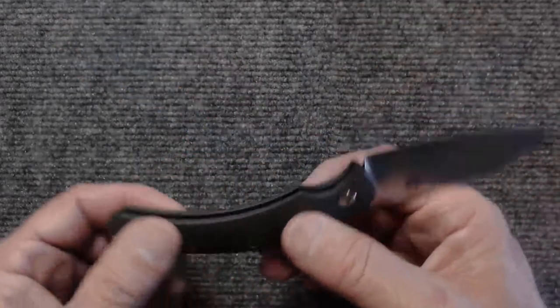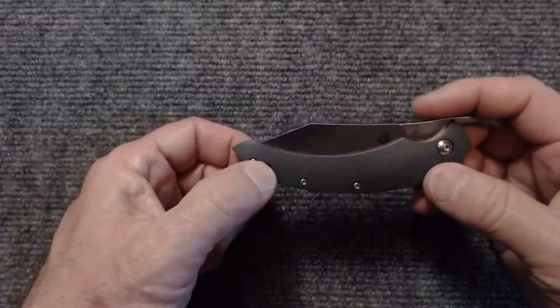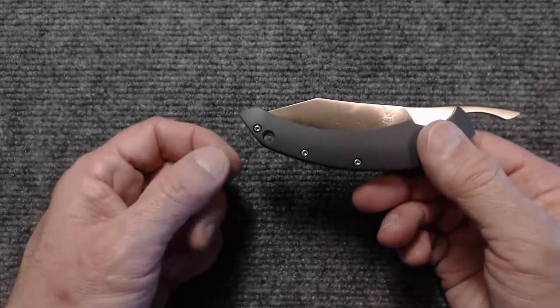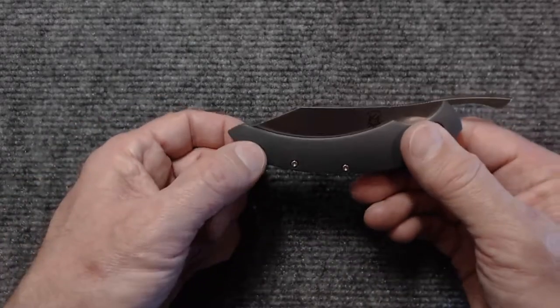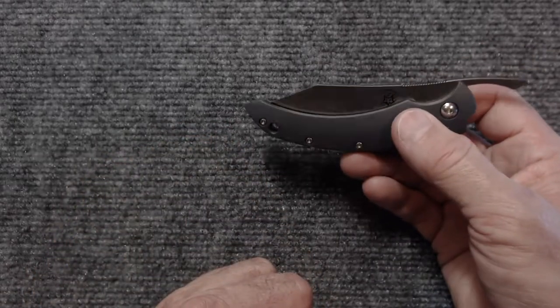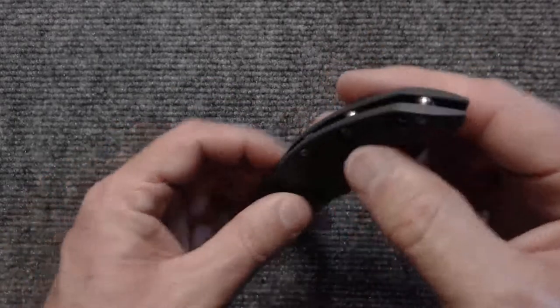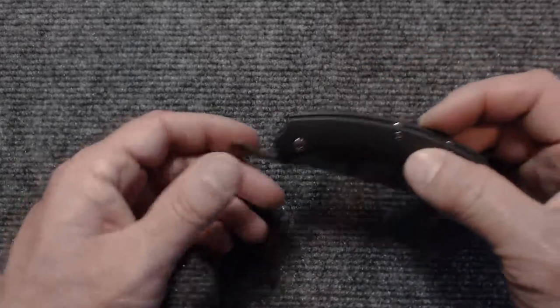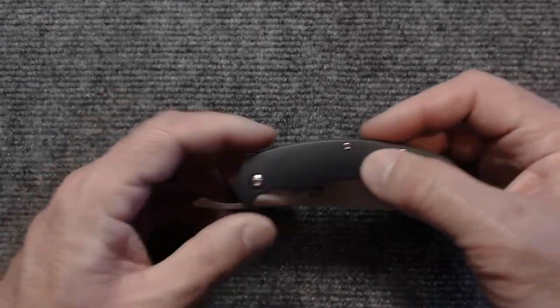Now one thing I do have a question about is the lanyard hole down here at the bottom of the knife. There's nothing wrong with it, it would work just fine. But my question would be in what case would you put a lanyard on this because you really can't put it in your pocket with the tang down. It's gonna stab in your pocket and poke a hole in no time.